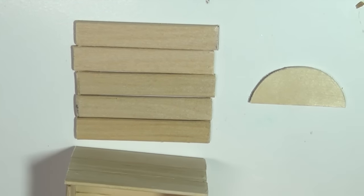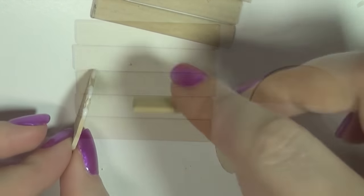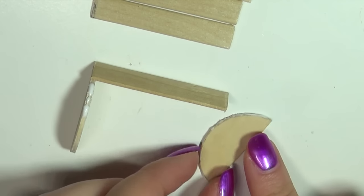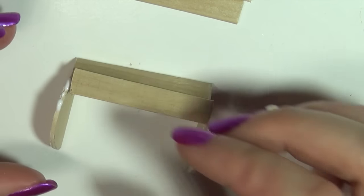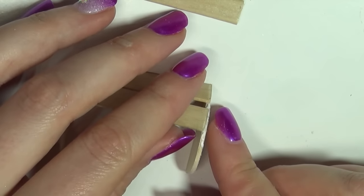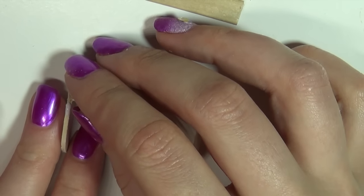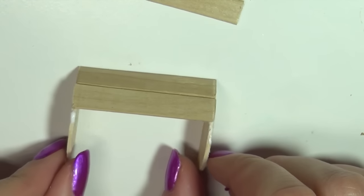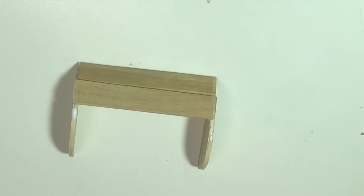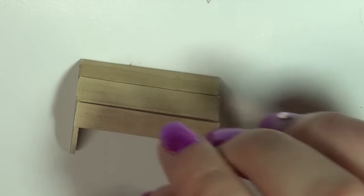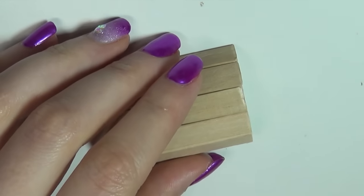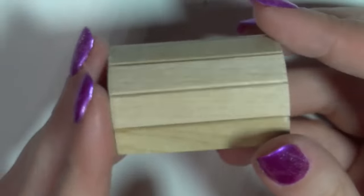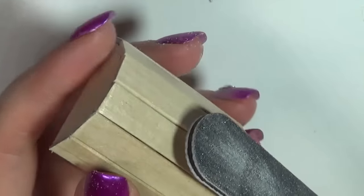Once you've got the two pieces ready you're going to cut some more popsicle sticks the same length as the front of the box. And then you're going to glue it in between the two pieces to make the lid. Once that's all dry you can use the file to round off the edges.